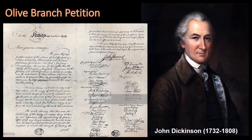In 1775, the Continental Congress adopts the Olive Branch Petition, written by John Dickinson, which appeals directly to King George III and expresses hope for reconciliation between the colonies and Great Britain. Dickinson, who had hoped desperately to avoid a final break with Britain, phrased colonial opposition to British policy as follows.